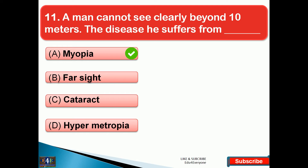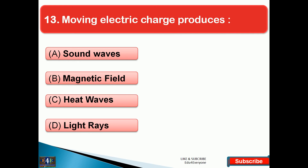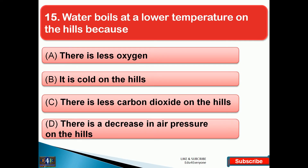Light beam which is highly directional is called — right answer option C, that is laser. Moving electric charge produces — the right answer is option B, that is magnetic field. When milk is churned the cream separates from it due to — the right answer is option A, that is centrifugal force.